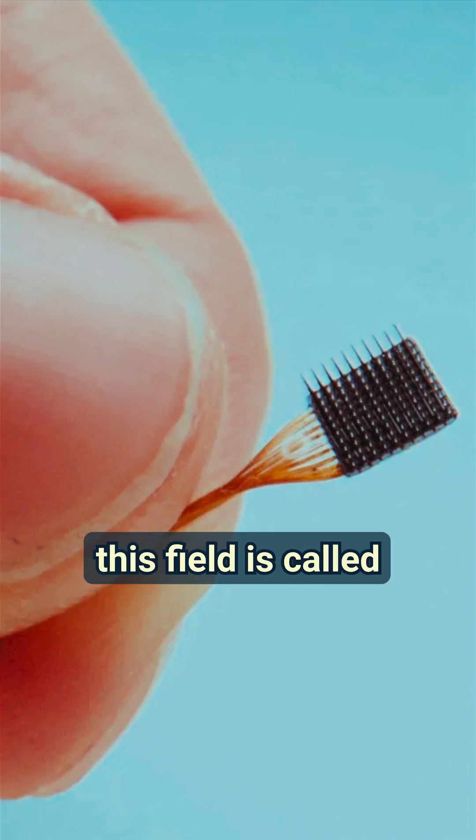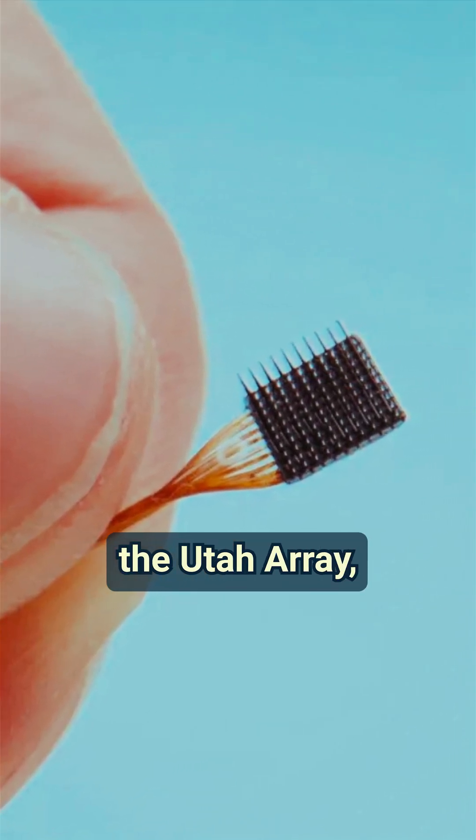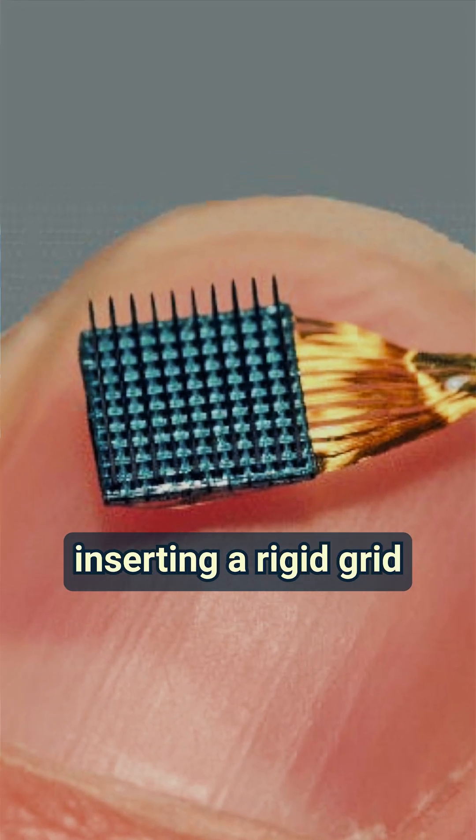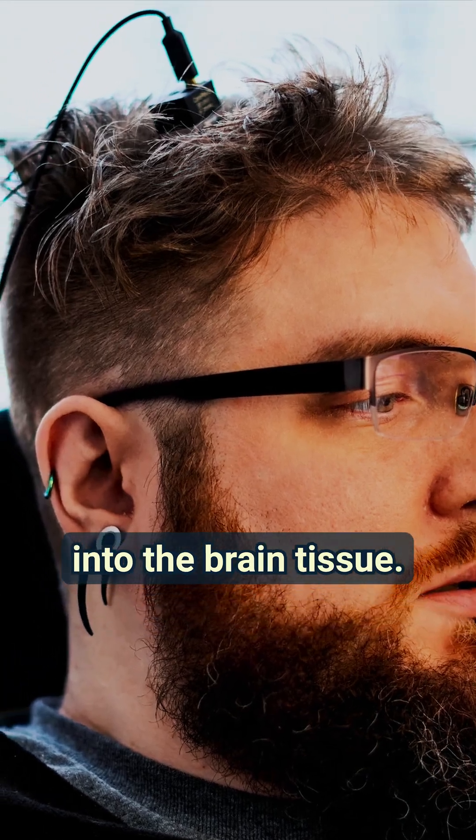One current state-of-the-art device in this field is called the Utah Array, which requires inserting a rigid grid of sharp metal probes into the brain tissue.